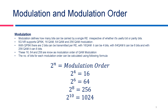The values 16, 64, and 256 are known as modulation orders of QAM modulation. The number of bits for each modulation order can be calculated using the formula 2 raised to the power n equals the modulation order. So for 2 raised to power 4 equals 16, n equals 4 bits. 2 raised to power 6 equals 64, so 64 QAM means 6 bits. 2 raised to power 8 equals 256, and 2 raised to power 10 is 1024. So if the QAM order is 1024, it means one resource element can carry 10 bits.